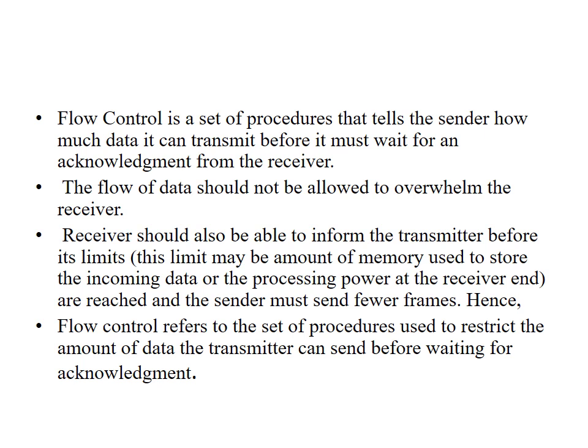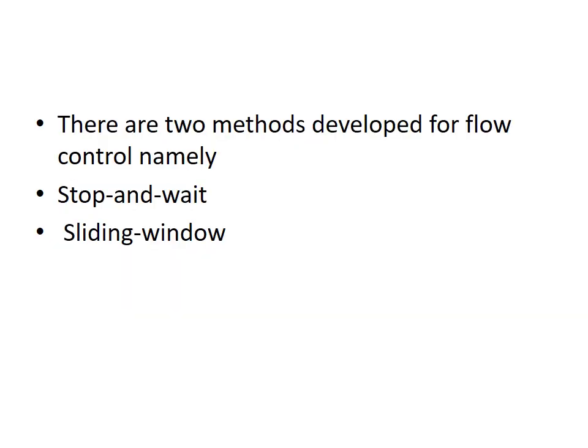This can be done through error control and error correction techniques. Flow control refers to the set of procedures used to restrict the amount of data the transmitter can send before waiting for an acknowledgement. We have two methods for flow control: one is the stop-and-wait protocol and the other is the sliding window protocol.